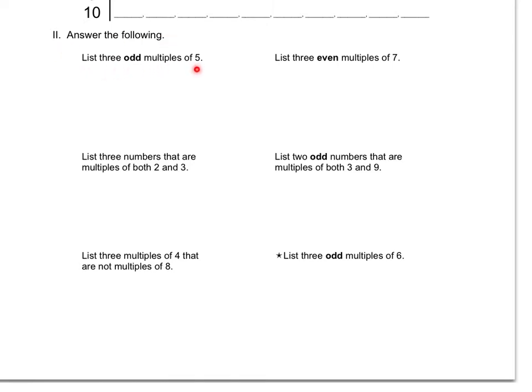Answer the following. List 3 odd multiples of 5. So I need to find 3 numbers that are bigger than 5 that 5 divides into evenly that also happen to be odd numbers. Okay, list 3 even multiples of 7. So again, these are multiples so they're bigger than 7.